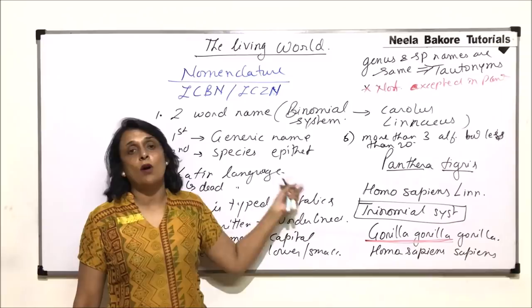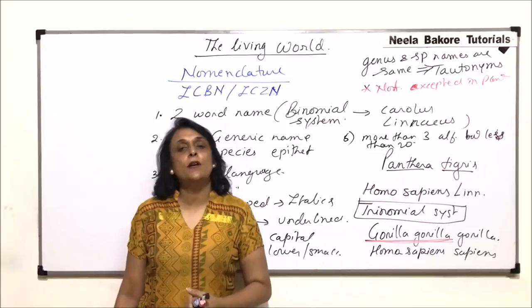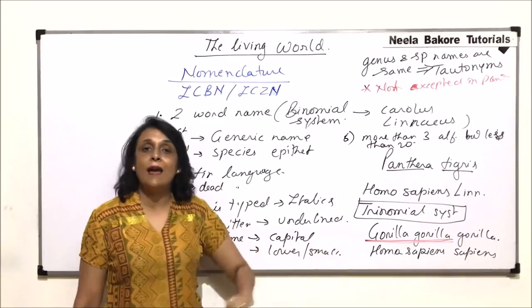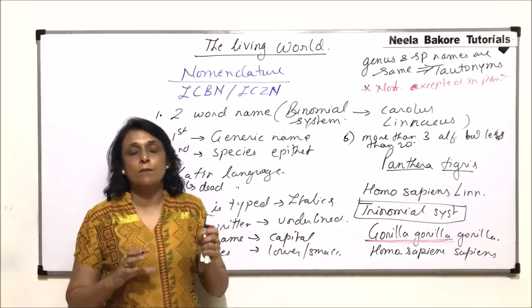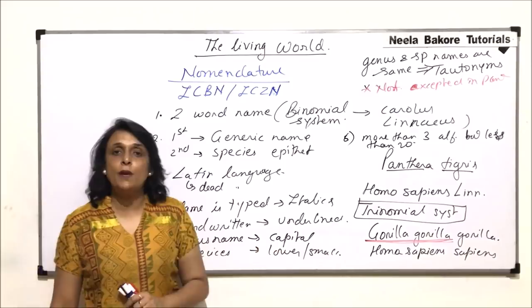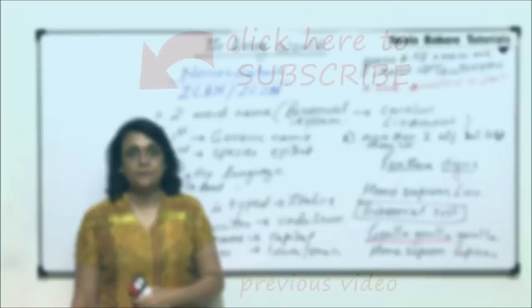So this is how the nomenclature — binomial or trinomial system — is done. Most commonly we use the binomial system which was given by Linnaeus. The trinomial system is also there but it is not as frequently used, applying to only a few species. Now we have a very systematic manner of naming a particular species, so wherever we go in the world the name would be the same. Local names can be different but the scientific names are going to be uniform all over. In the next part we will talk about systematics, taxonomy, and the categories — how we arrange organisms in a hierarchy.